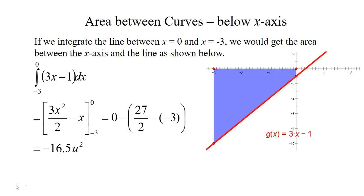Okay so using integration we're going to integrate from negative 3 to 0, the two intersection points, and we got negative 16.5 units squared.